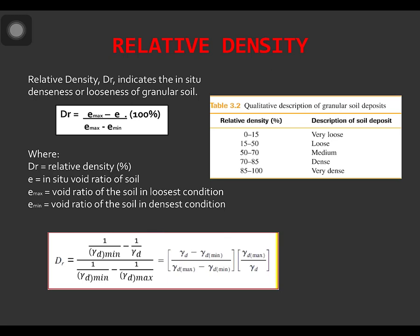But in actual practice, the relative density in construction must be greater than 95%.